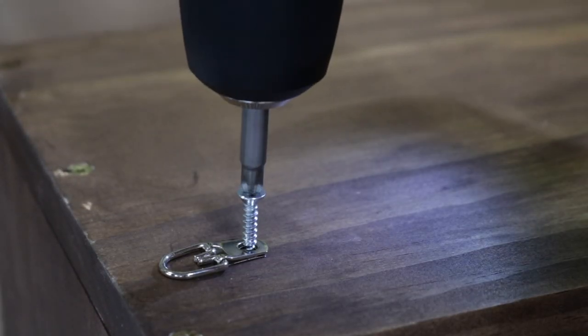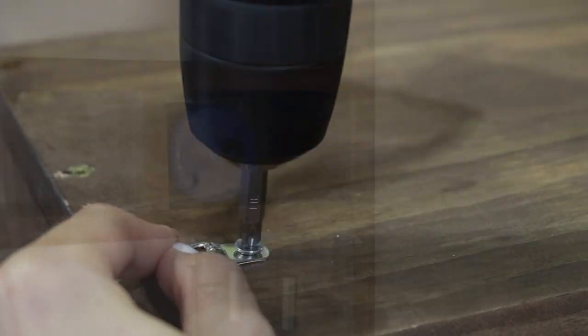And the last step will be to add picture hanging hooks to the back that will support the weight of your bicycle.